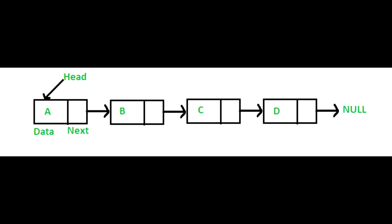The problem with a linked list is that you cannot access nodes without starting from the top and moving all the way down. If you want to find node C, you can't jump directly — you have to start from A, go to B, and then finally get to C. The only way to traverse a linked list is to start from the head and go through next pointers. There's no way to directly access a certain value.